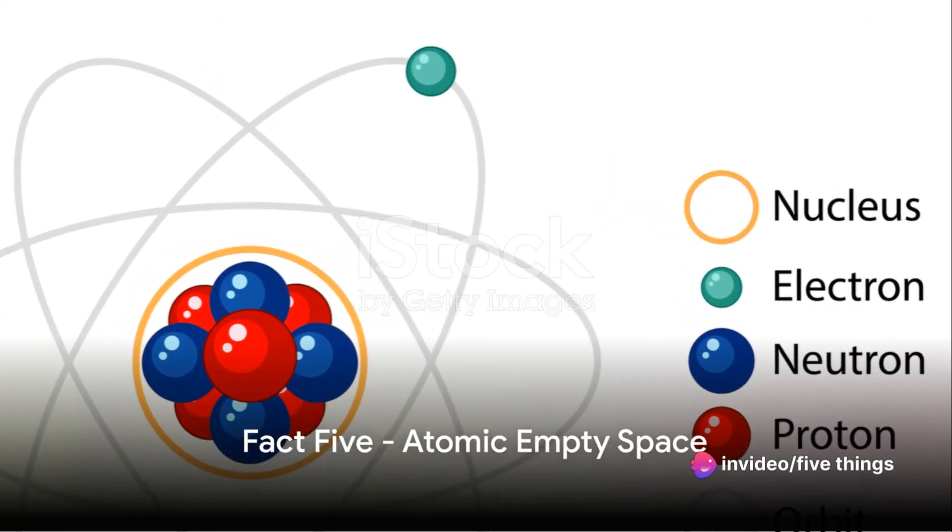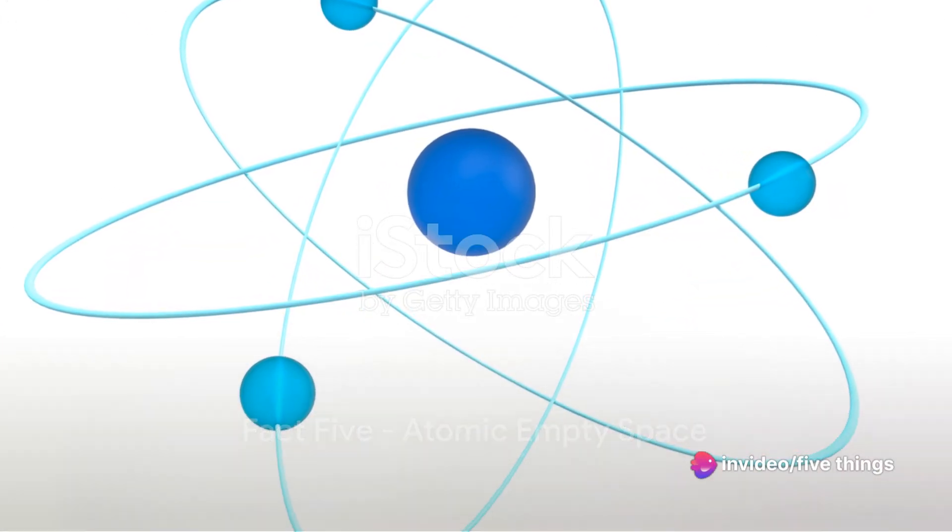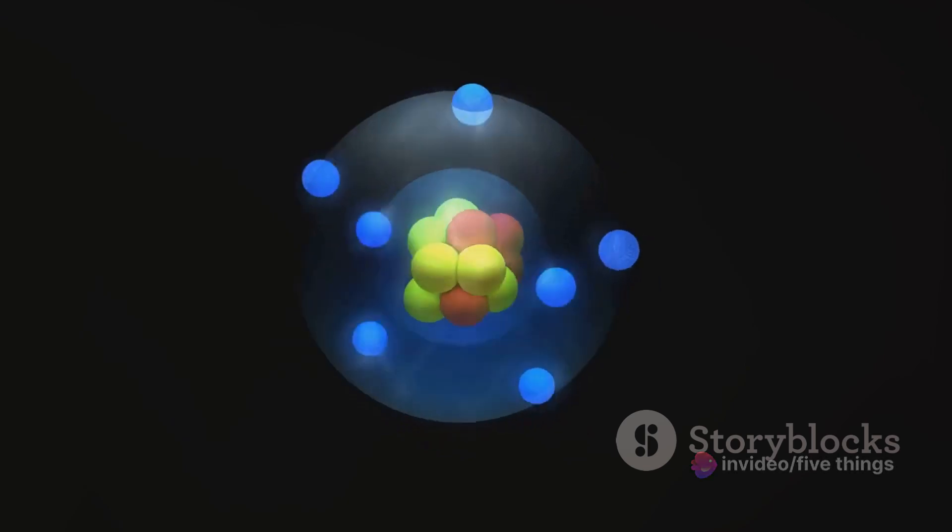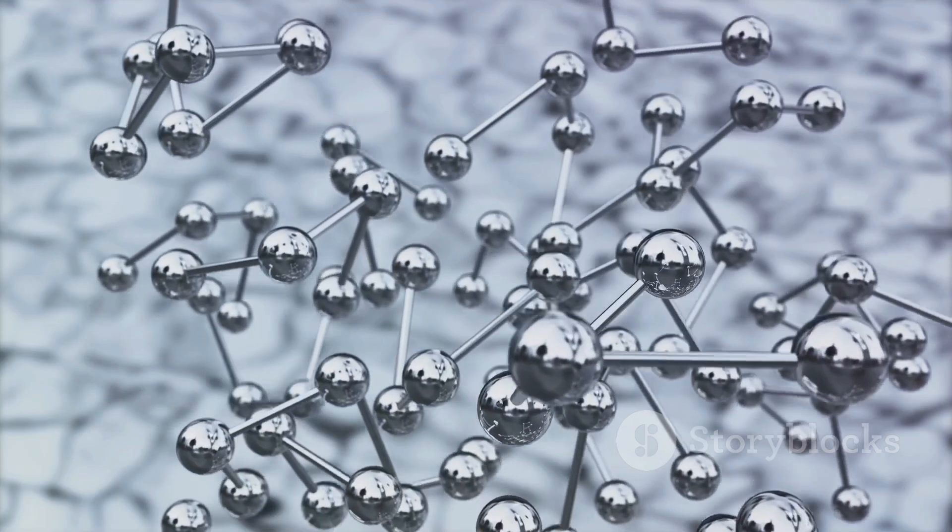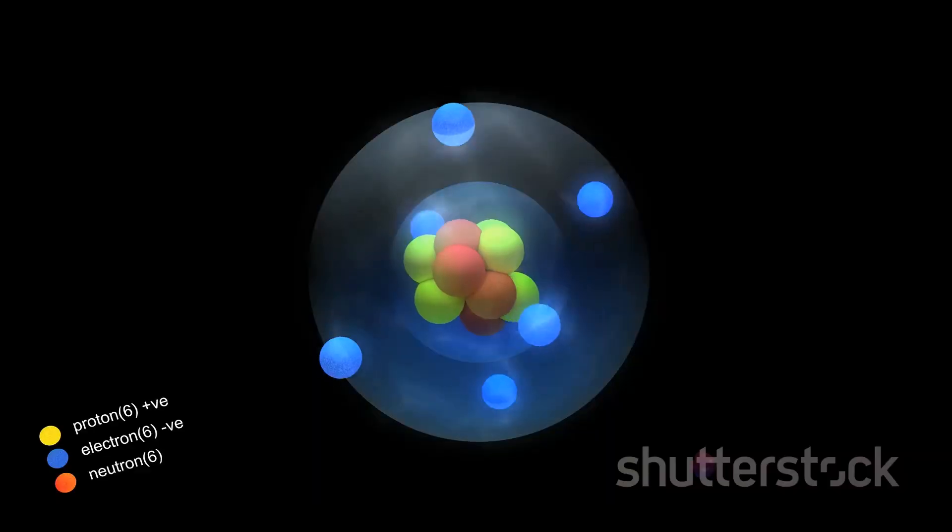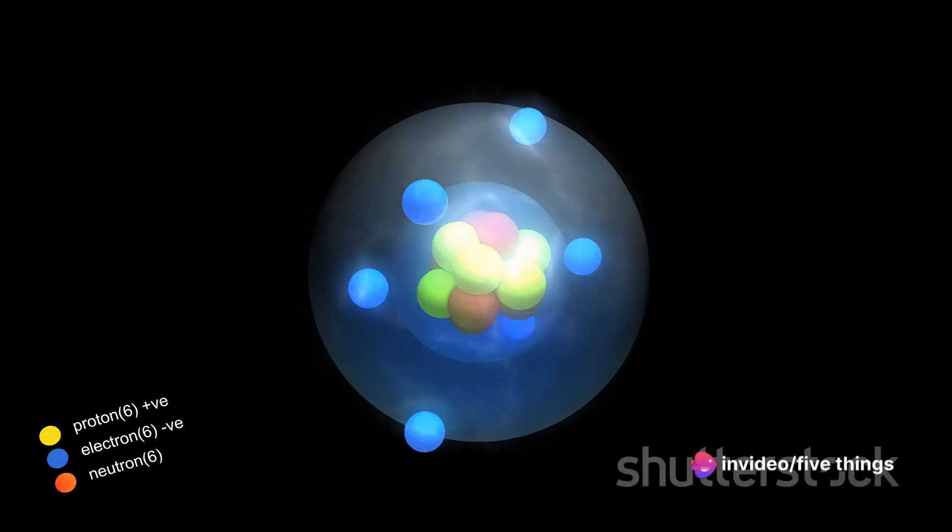Starting with number five, did you know that atoms are mostly empty space? Indeed, an atom is a tiny nucleus orbited by even tinier electrons, with a whole lot of nothingness in between. That's right, we and everything else are mainly made of nothing.